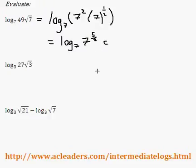And now, according to the exponent rule, I can basically bring the 5/2 down: 5/2 log 7 base 7. And log 7 base 7 is just equivalent to 1. 1 times 5/2 is 5/2.